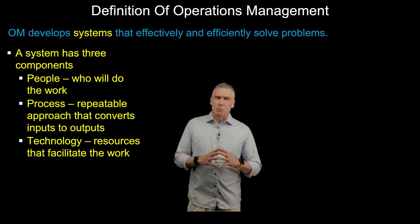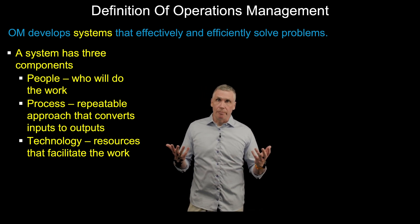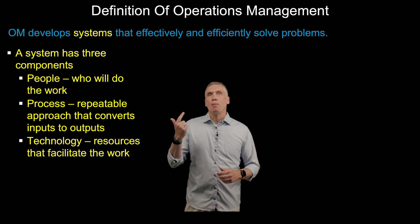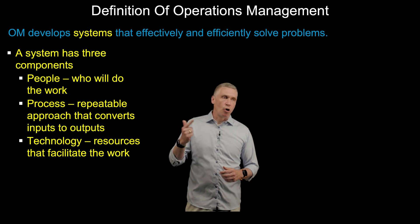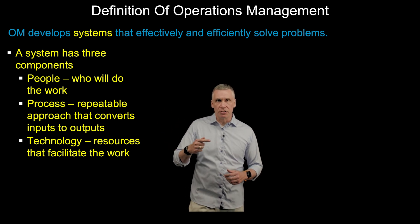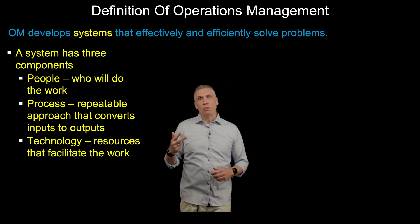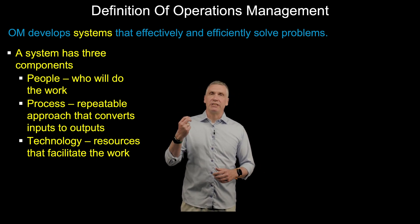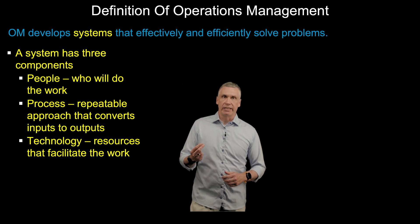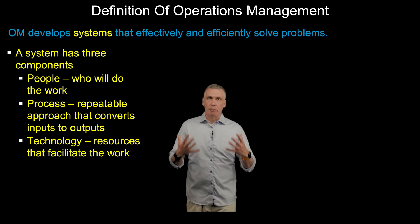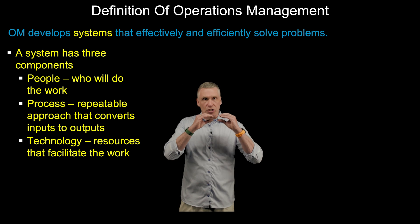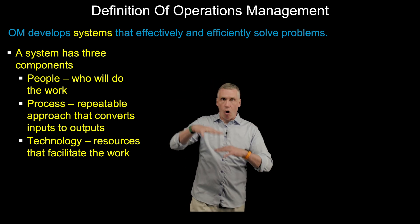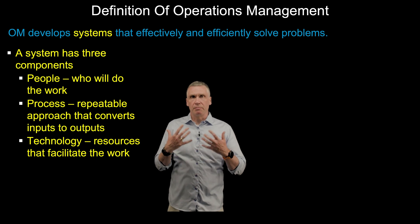Operations management develops systems. A system has three components: people — who's actually going to do the work; processes — a repeatable approach to convert inputs to outputs; and technology — resources that facilitate the work. A good solution needs all three of these ingredients. When developing a system, it's not just the process, not just the technology, not just the people — all three are required.